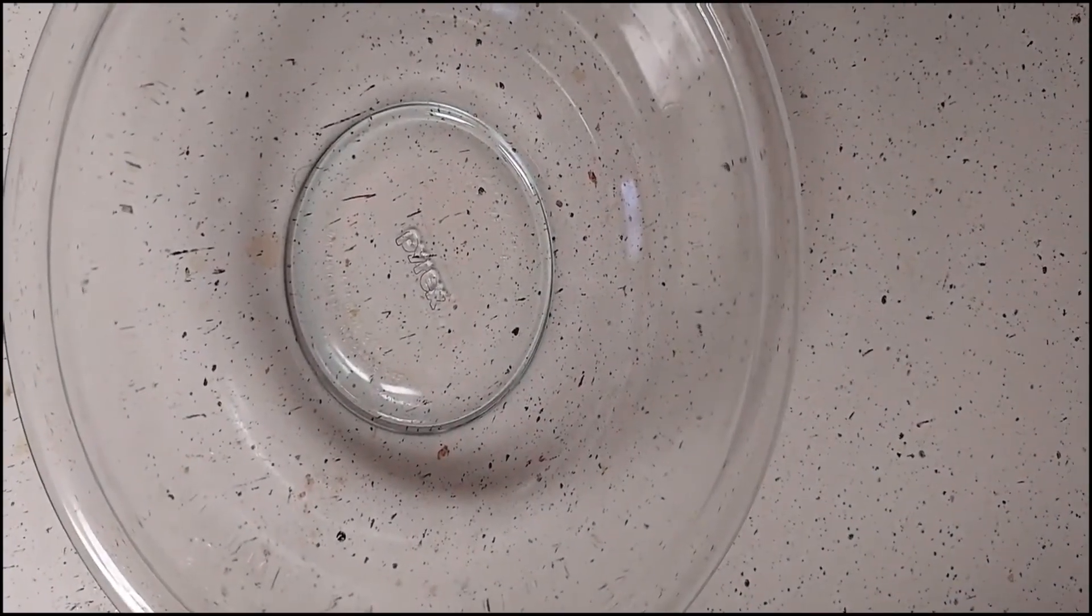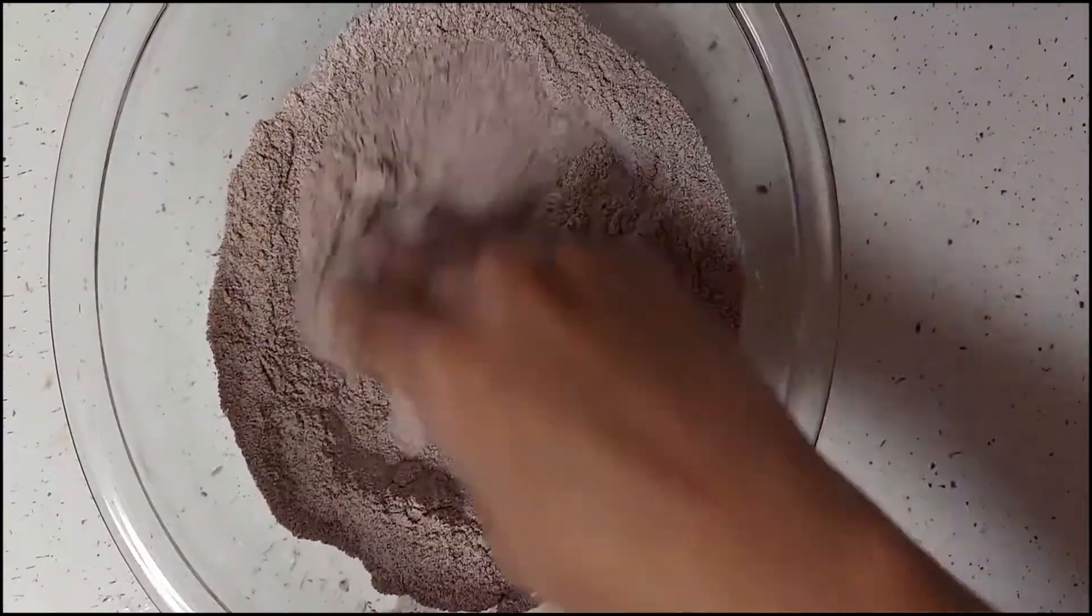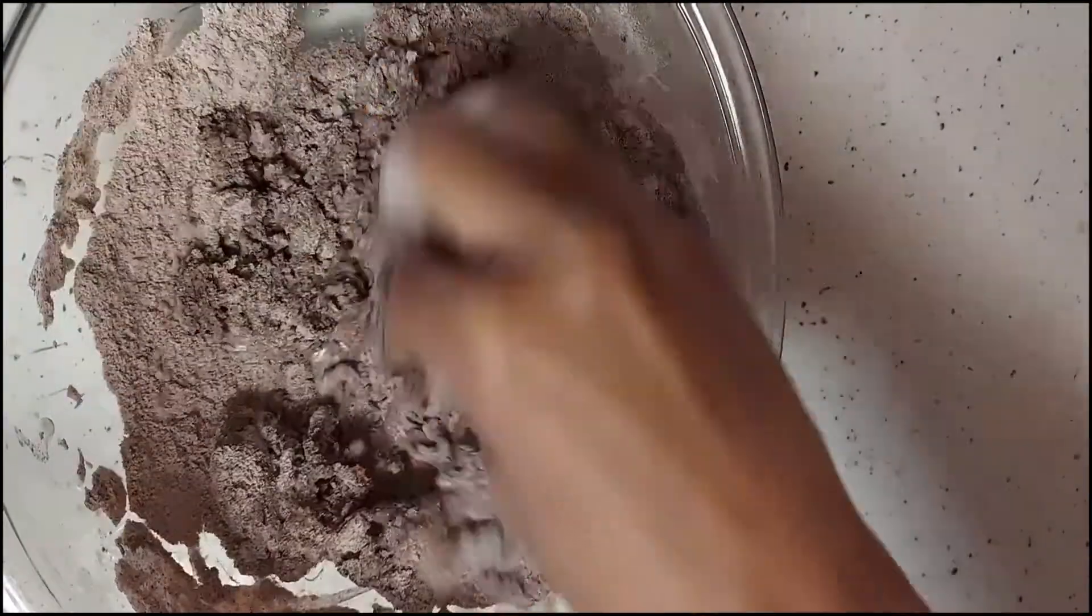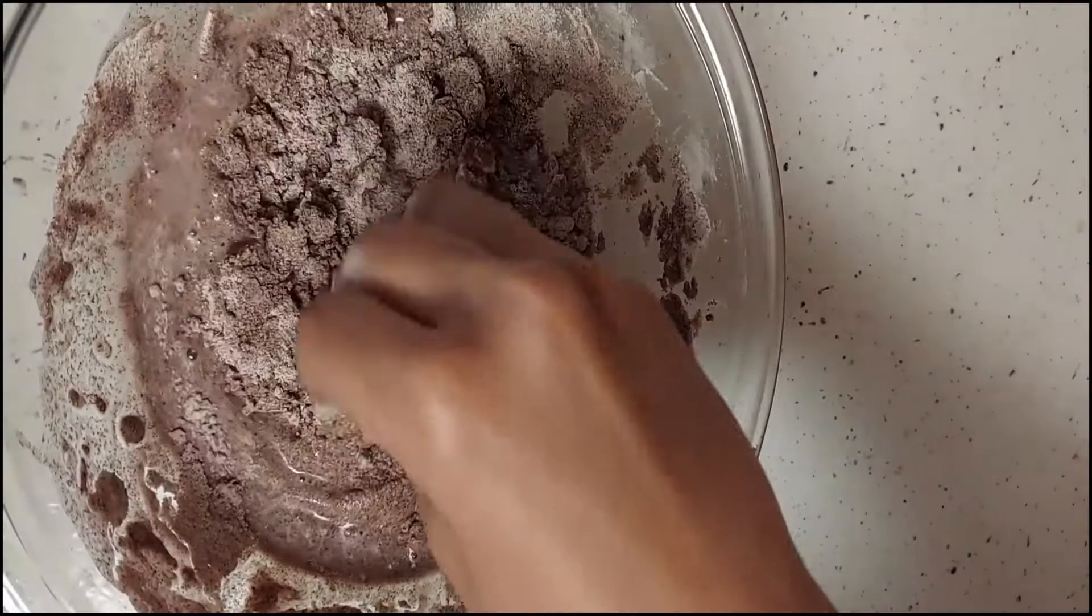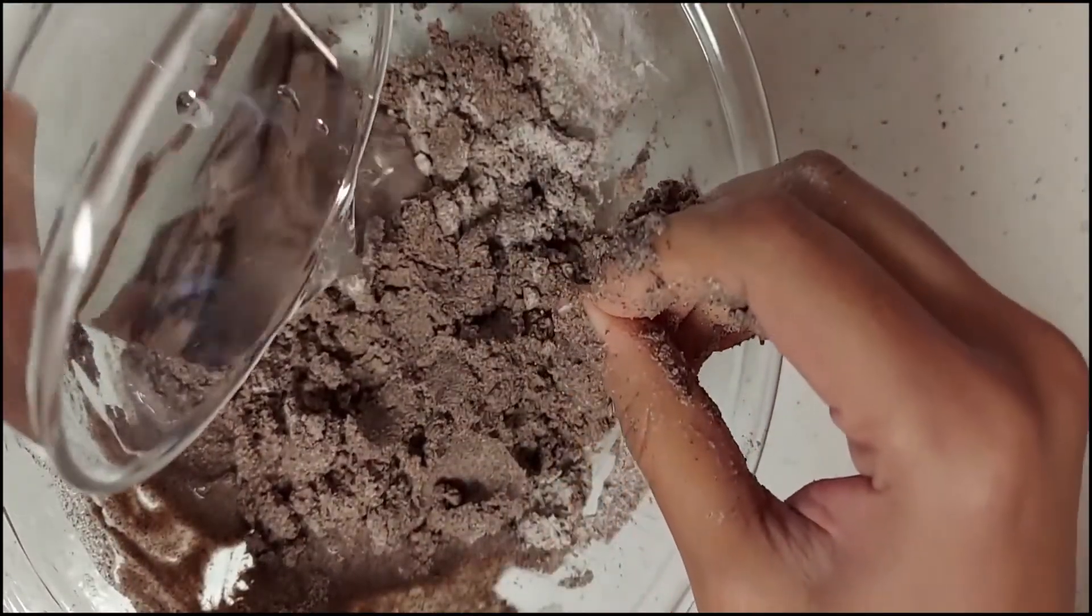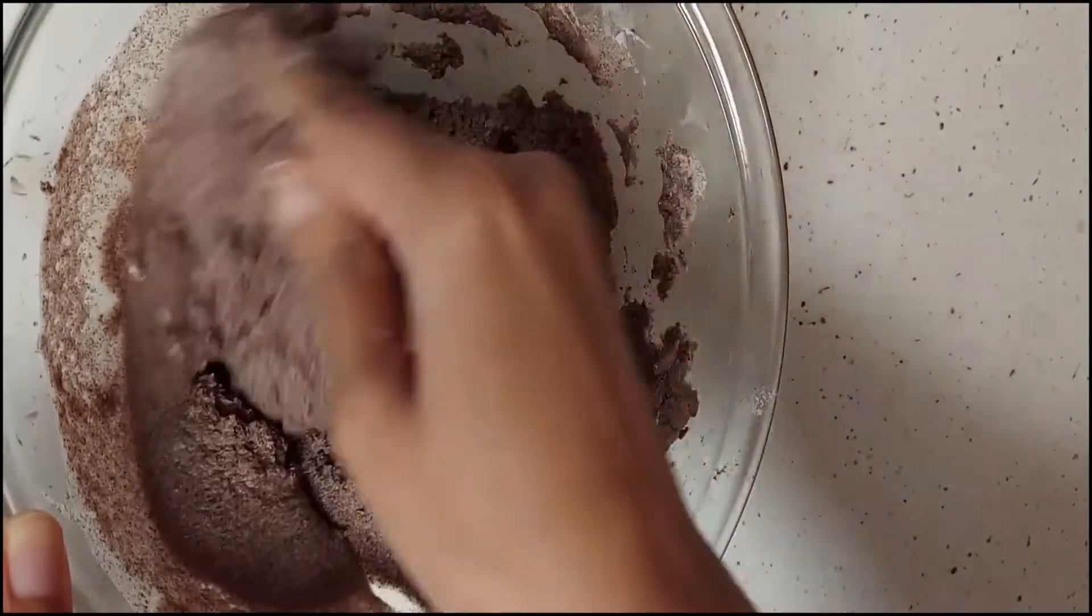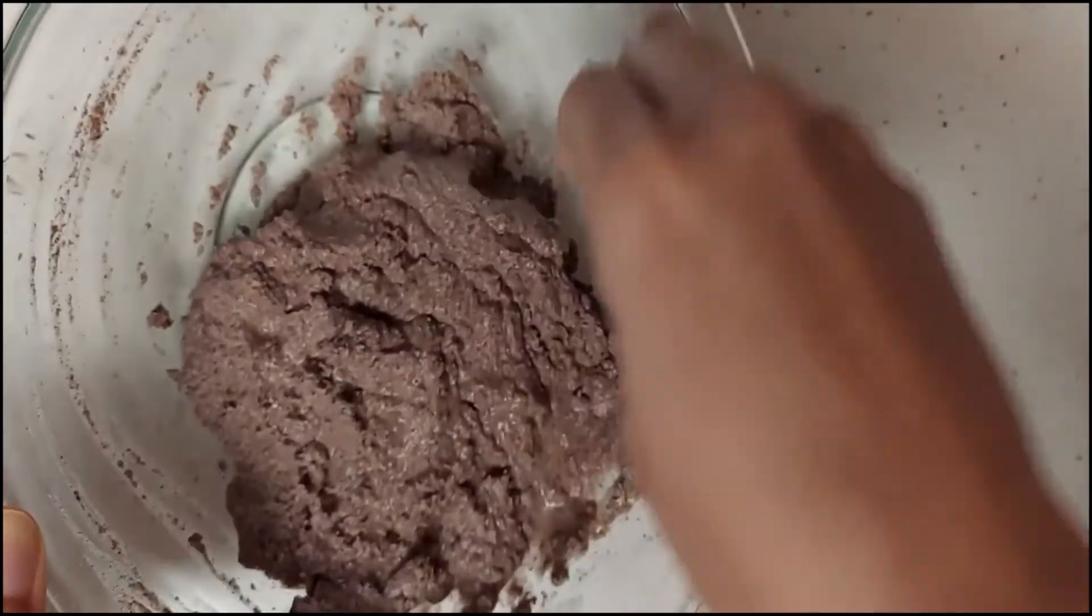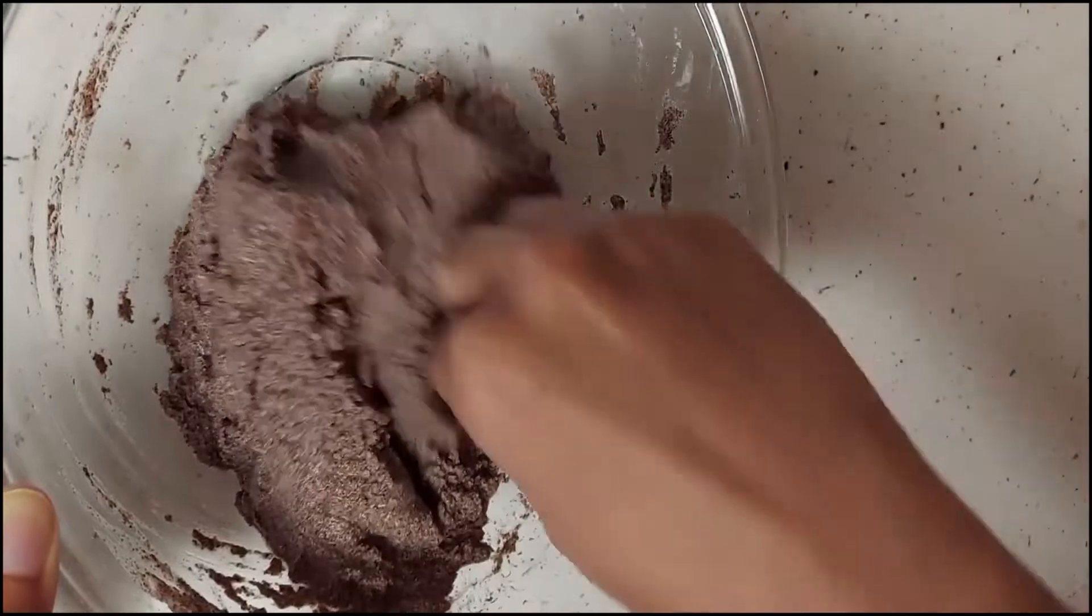Let's take one cup of ragi flour in a bowl. Add a pinch of salt and mix the dry ingredients. Add enough water to make a soft dough. Add water little by little. The dough should be of soft consistency. It will not be a hard dough like chapati dough or puri dough. This is the consistency of dough we are looking for.